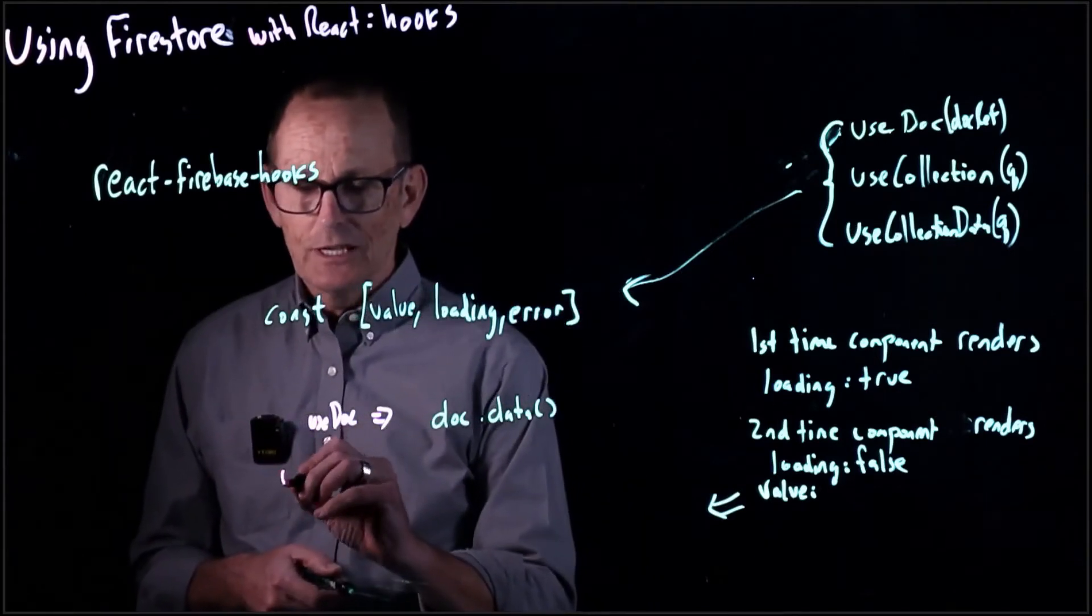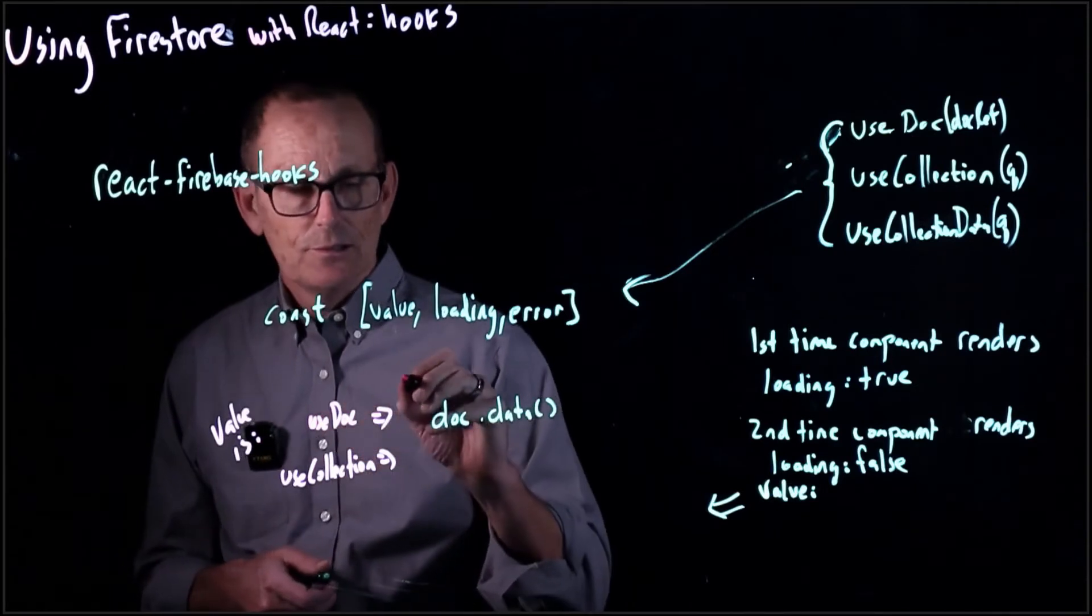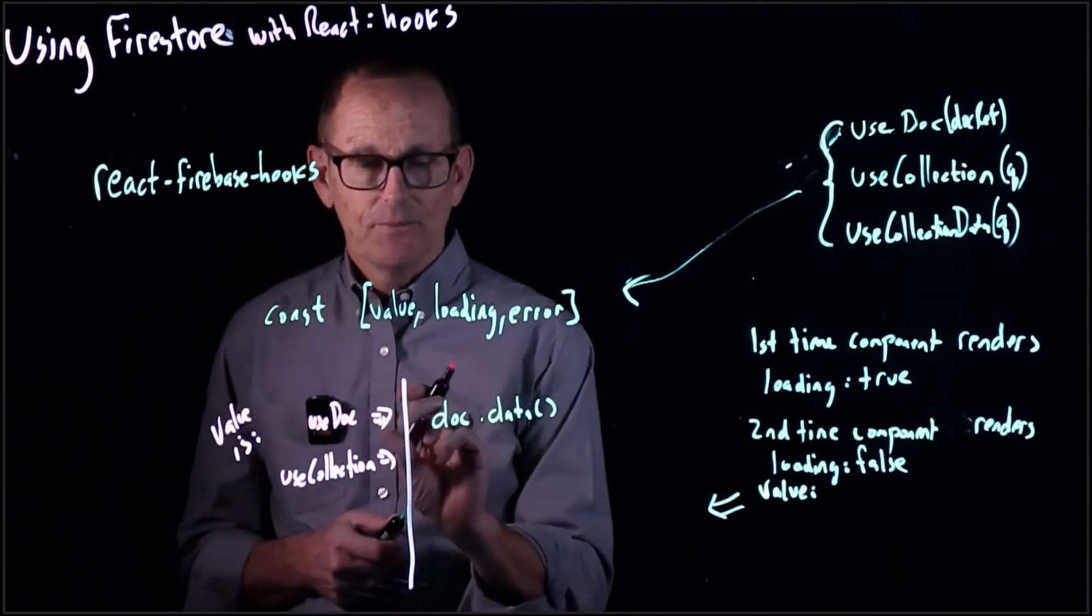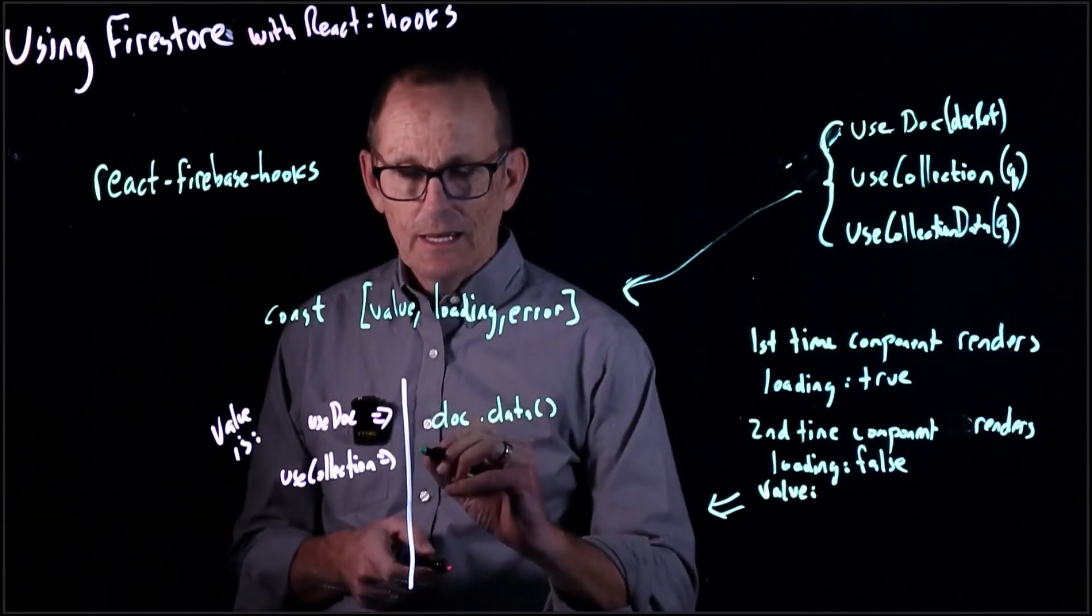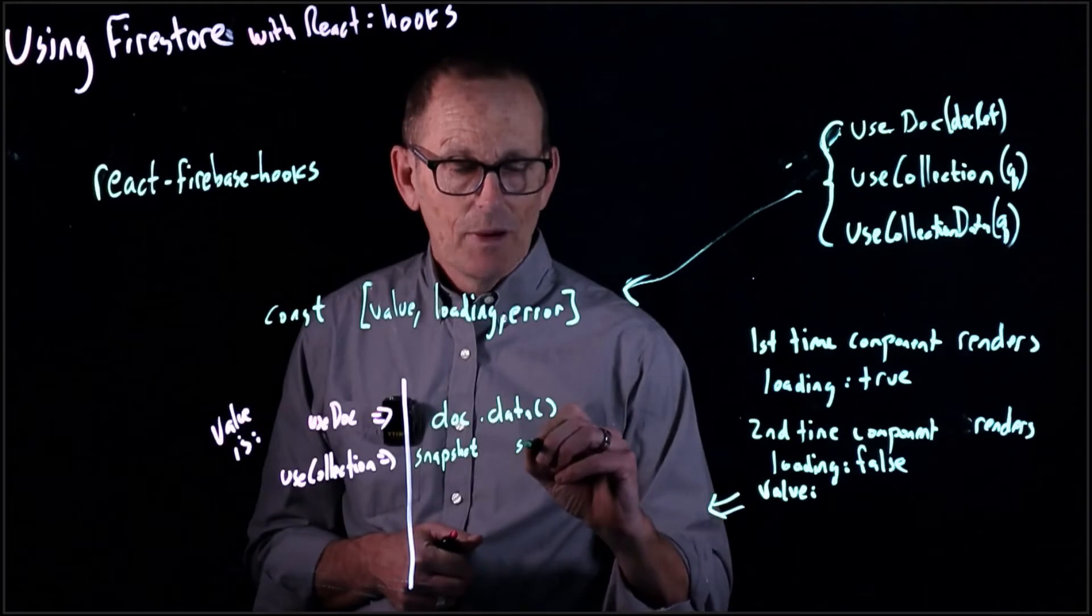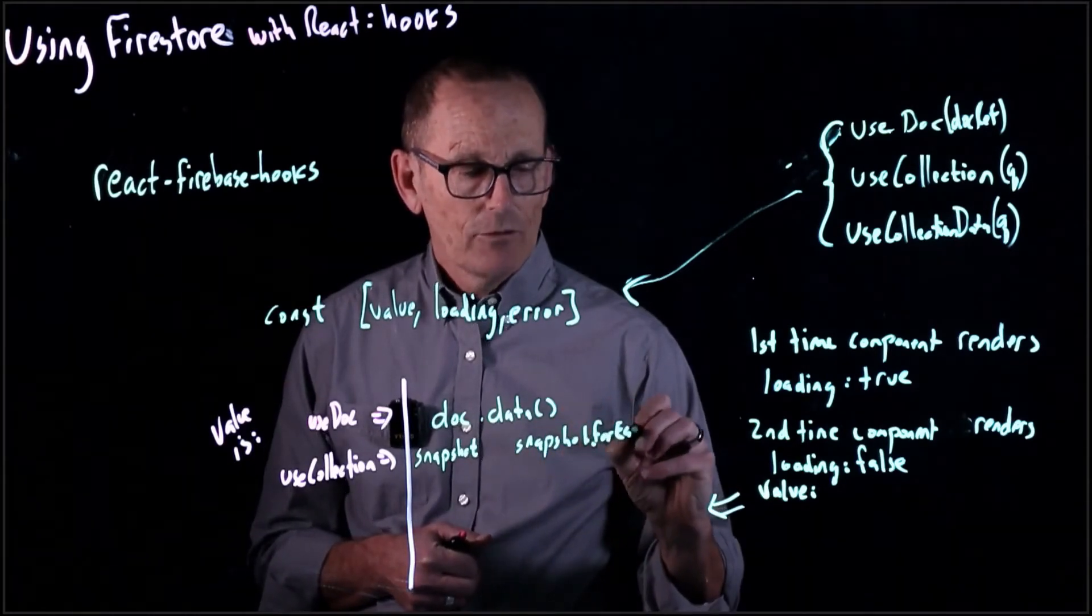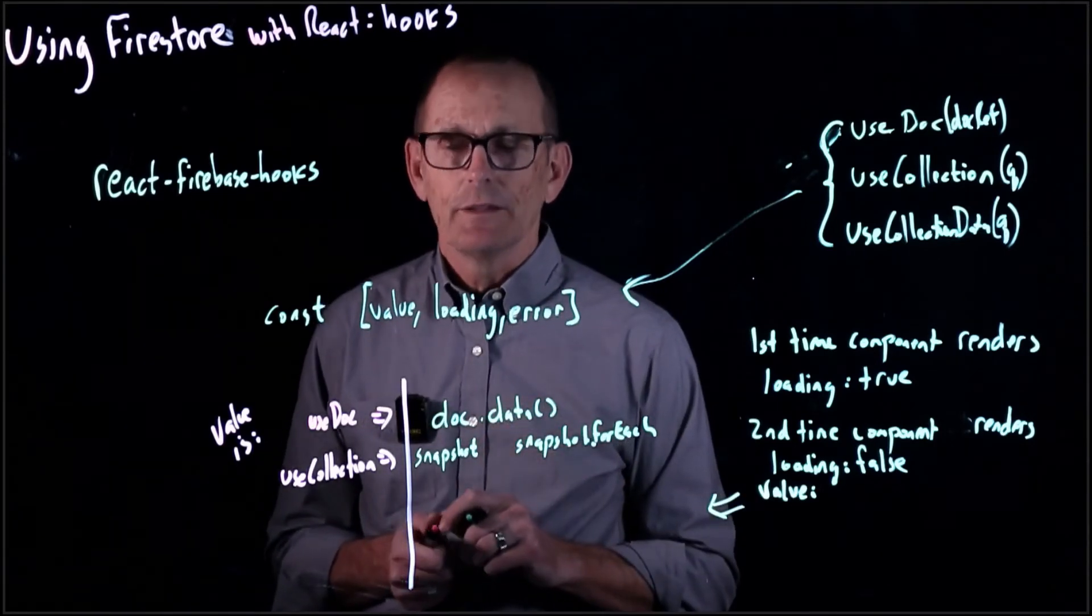Or, if we call useCollection, value is one of these three things. It's either a document or it is a snapshot. If it's a snapshot, what are we going to do? We might call snapshot.foreach, for example, and then we will get each of the documents and we can do a .data on there.